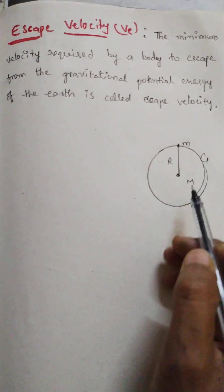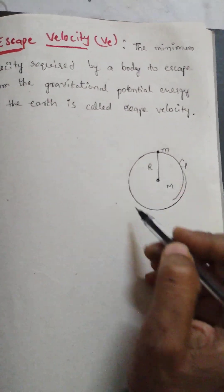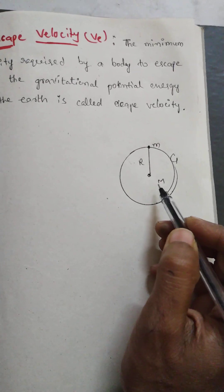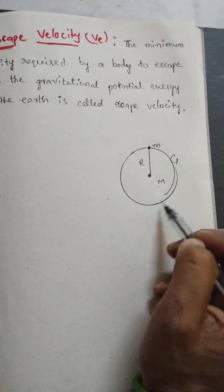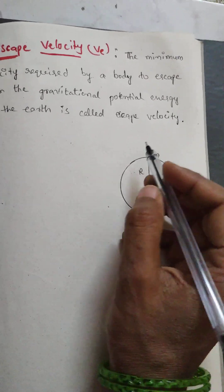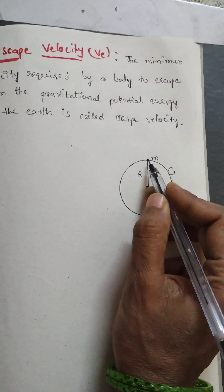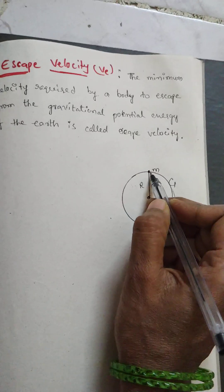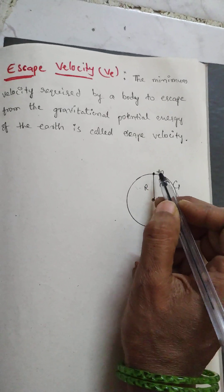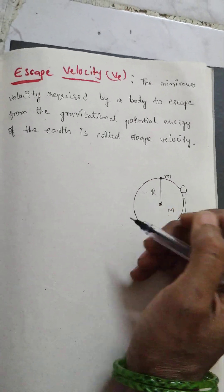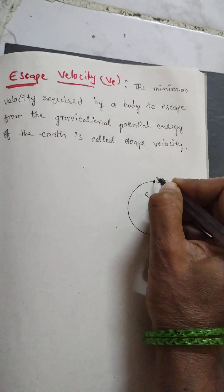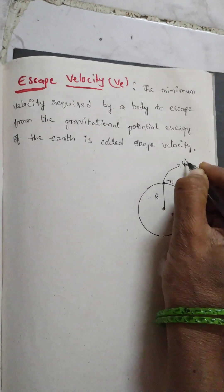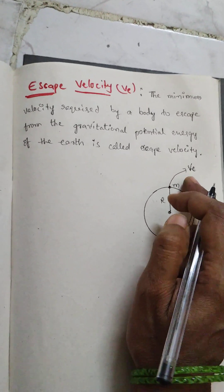Let us start the derivation. We are considering the Earth in the form of a sphere which has radius R and mass of the Earth is M. The gravitational constant we are taking as G. The body is lying on the surface of the Earth with mass m. We have to give this body a velocity sufficient to escape from the Earth's gravitational field — that velocity is v, which is the escape velocity.